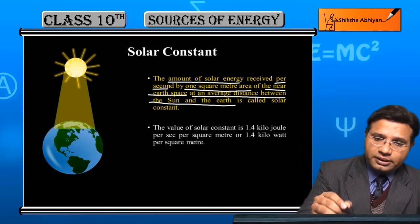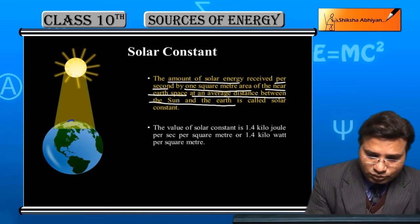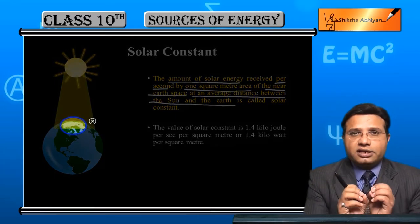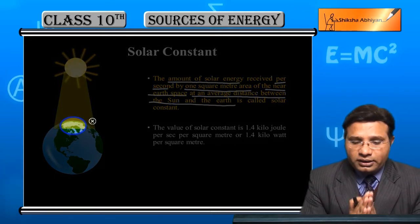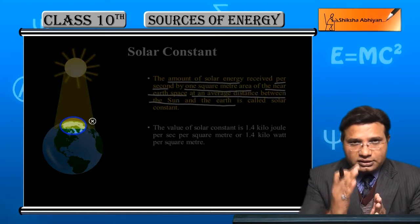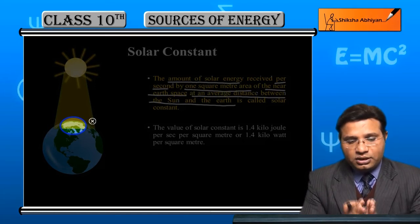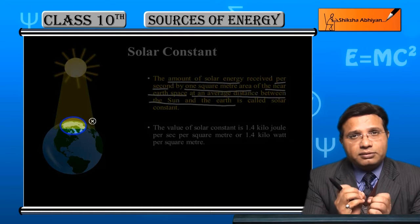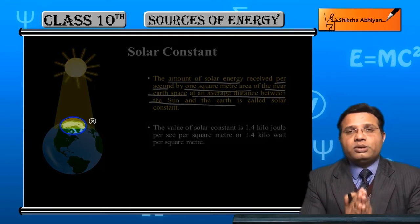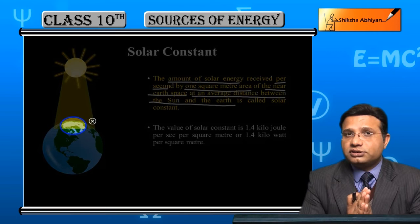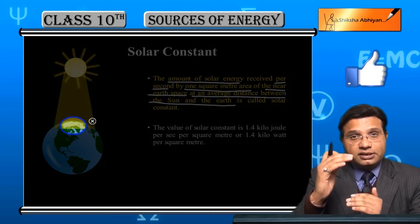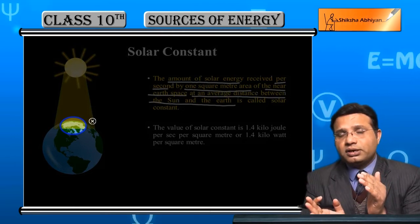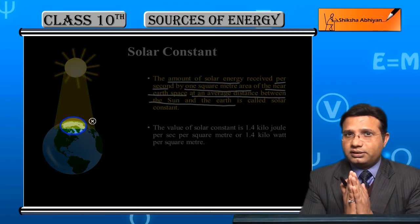So, if we consider this section — suppose we are focusing on it — and the area is one square meter, the sun's energy is incident on this section, and how much energy does it receive in one second on one square meter area — that value is the solar constant. However, the positions of the sun and Earth keep changing continuously, so the distance we have taken is the average distance between them.